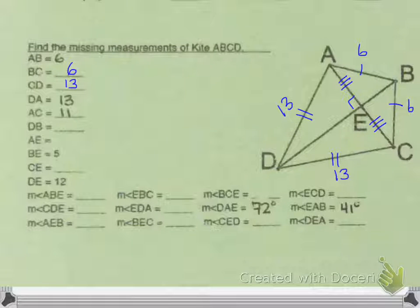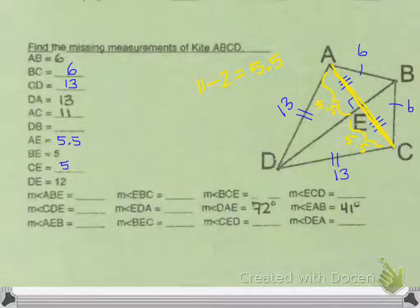One thing we know is the whole diagonal A to C is 11. So if I want to find half of that, which is AE, half of 11, and you can use this on your calculator, would be 5.5. So that would be the length of AE and also of EC. Both of these would be half of 11, which is 5.5.